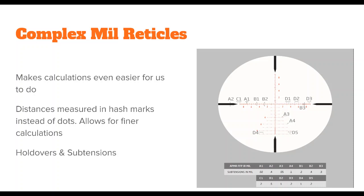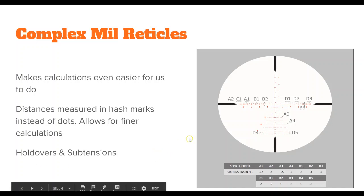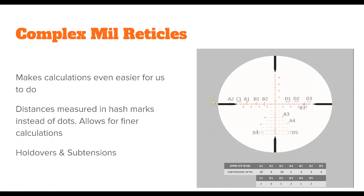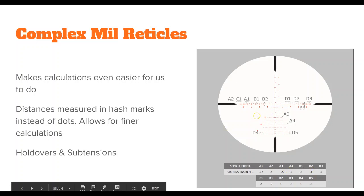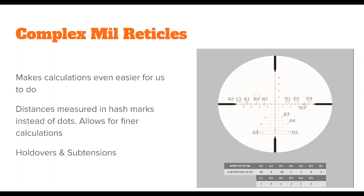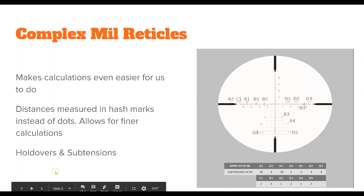From the mil-dot reticle, let's look at more complex mil reticles. Complex mil reticles are just a build off of the original mil-dot reticle and they make it even easier to do distance calculations. Distances on more complex mil reticles are measured between hash marks instead of dots, allowing for much finer calculations. These reticles come in defined subtensions — you can see them labeled like A2, C1, A1, B1, B2 — and referencing them gives you the distance of each subtension. For example, the B2 subtension distance is 0.4 mil.